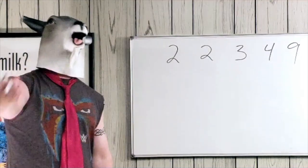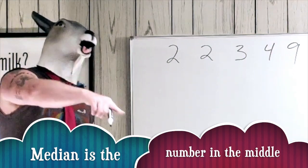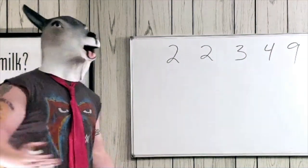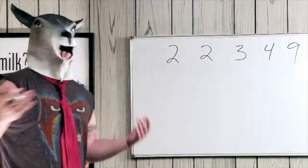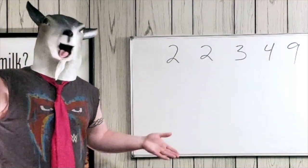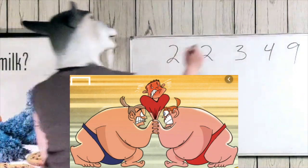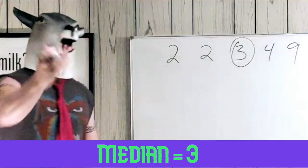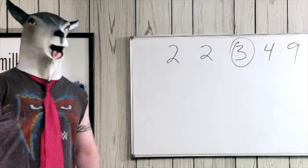Alright, so now we know the mean is 4. Next up is the median. Median sounds a lot like middle, right? So all you're gonna do — since we already have the numbers from least to greatest — is look for the number in the middle. And you can see right there that 3 is in the middle. So 3 is your median. Done.